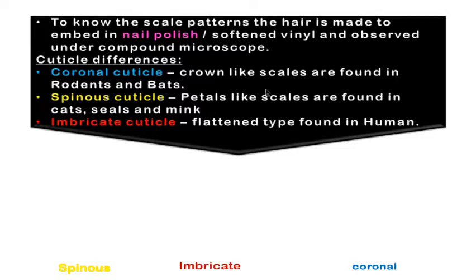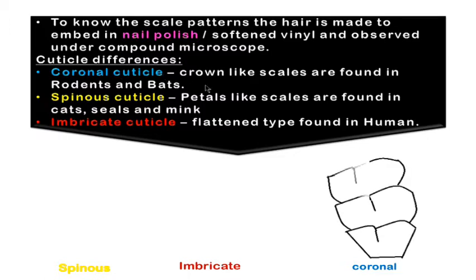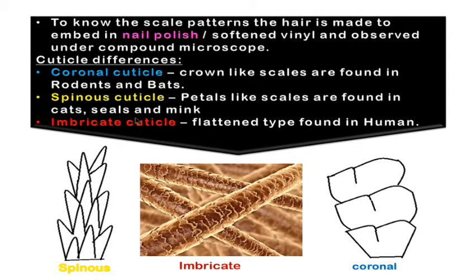Cuticles are the scale patterns of hair, observed by applying nail polish or softened vinyl on a slide, pressing a strand of hair onto it, drying it, and examining it under a compound microscope. Coronal cuticle has a crown-like scale pattern, found in rodents and bats. Spinous cuticle has petal-like scales, found in cats, seals, and mink. Imbricate cuticle is the flattened type found in humans.